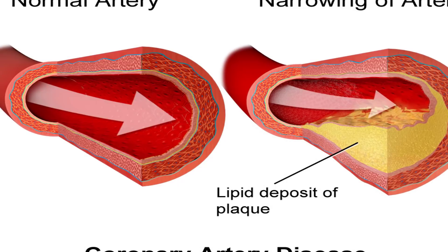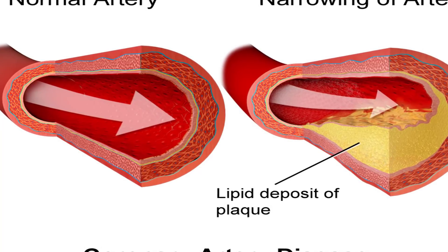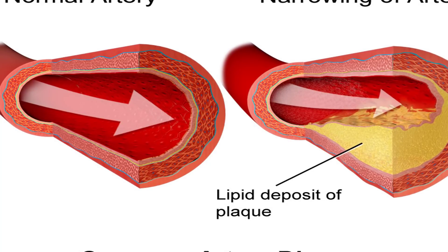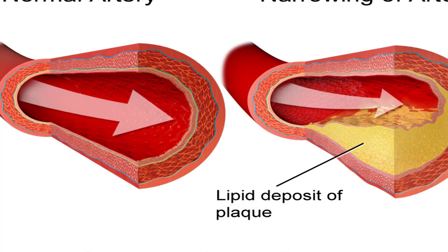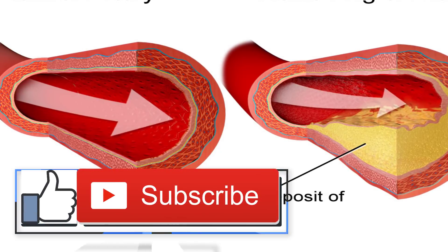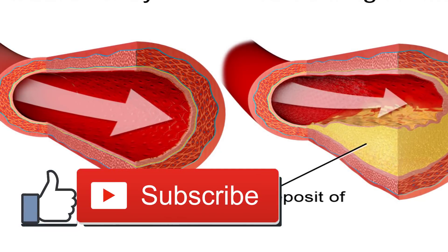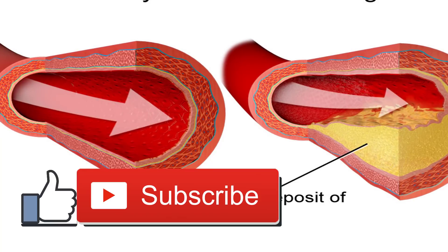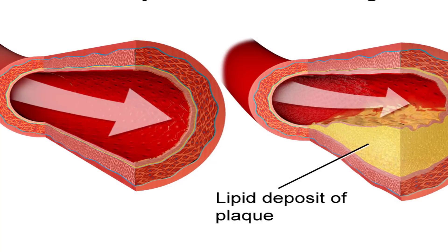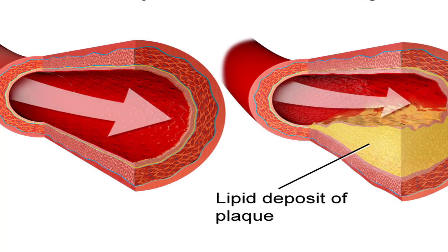Symptoms of CAD: When your heart doesn't get enough blood, you may experience a variety of symptoms. Angina, or chest discomfort, is the most common symptom of CAD. Some people describe this discomfort as chest pain, heaviness, tightness, burning, or squeezing. These symptoms can also be mistaken for heartburn or indigestion.